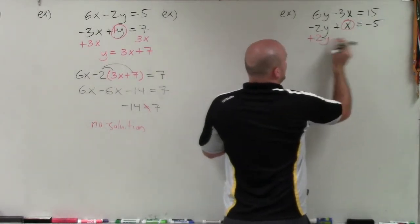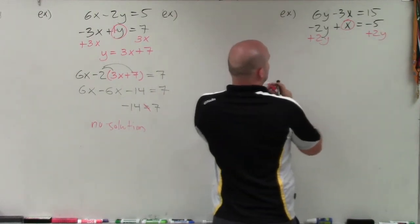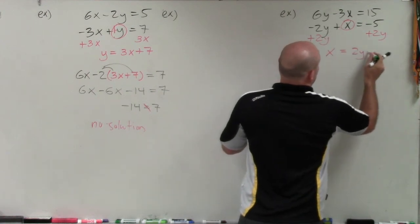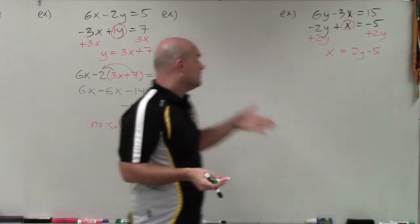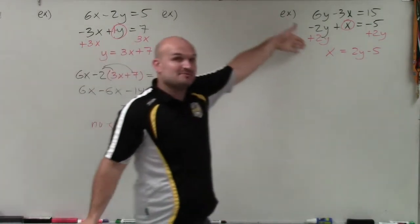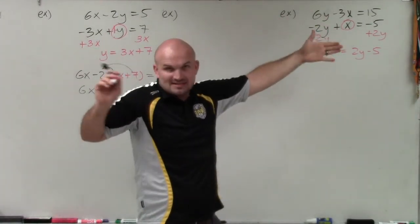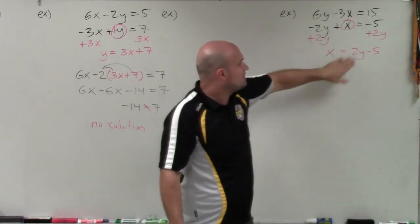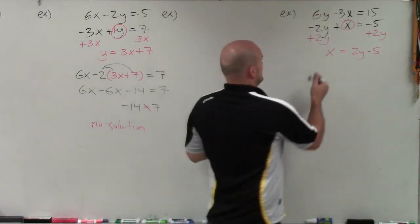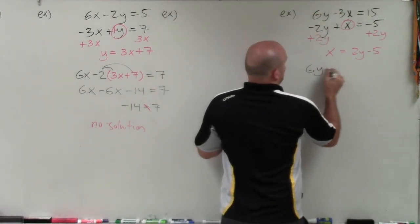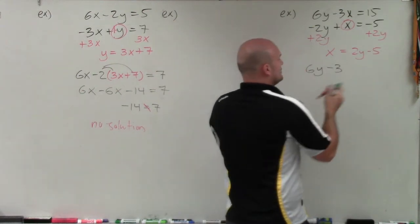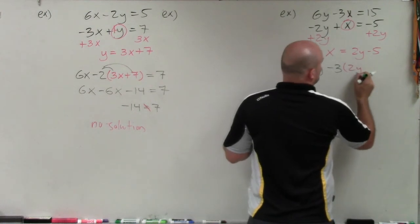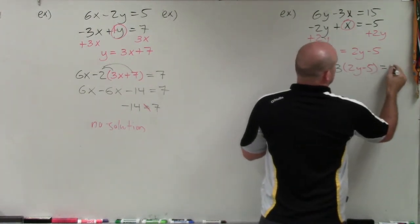So now I'm going to solve for that x by adding 2y to both sides. So therefore, I'm left with now x equals 2y minus 5. So now, in this one, I solved for y and I found out what y equals. Now, I'm solving for x. So you can solve for x or y, it doesn't matter. You just want to solve for the variable that has a coefficient of 1 or negative 1. So now I know what x is. Now I'm going to plug in the value of x into my other equation. So I have 6y minus 3 times, not just x, but times what the value of x is, which we determined in here, which is 2y minus 5, and that's equal to 15.